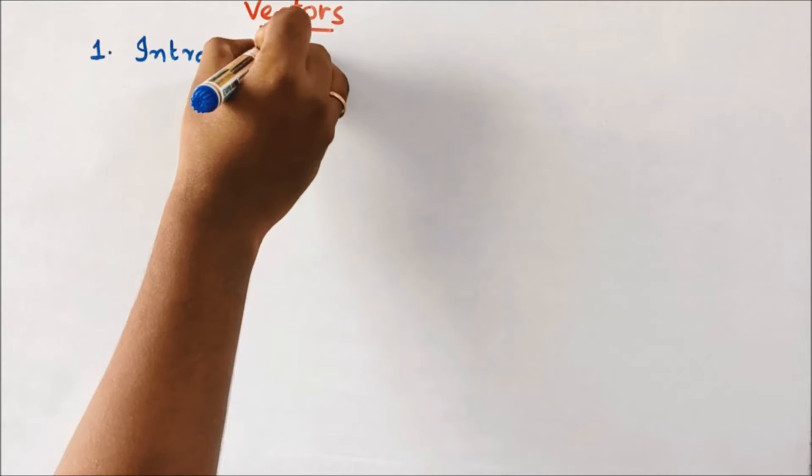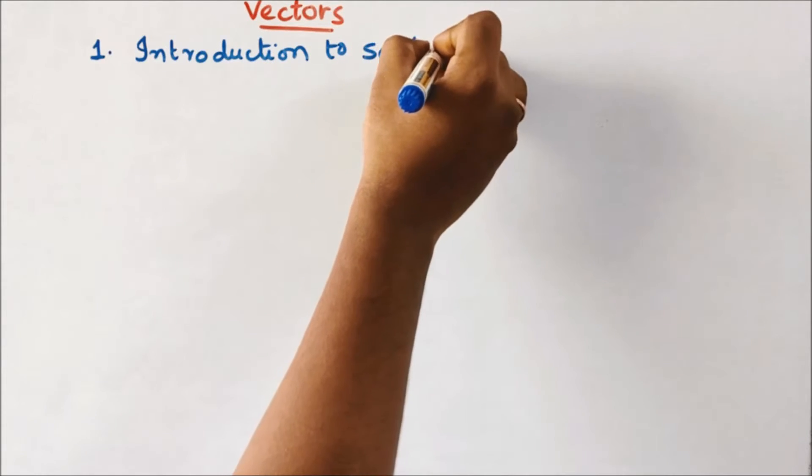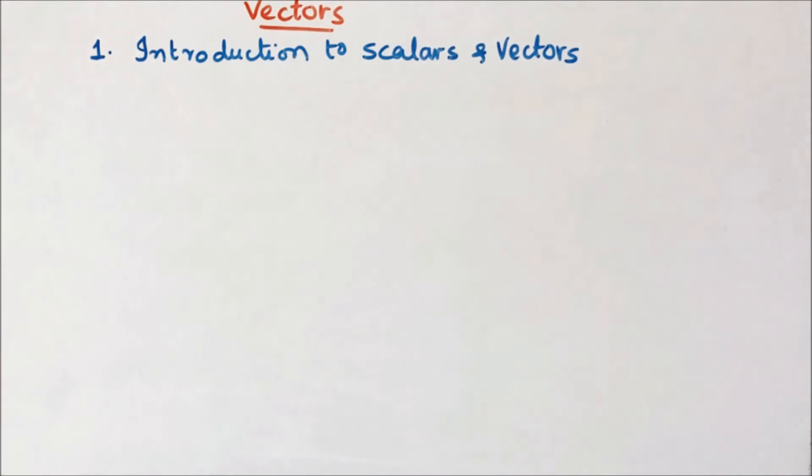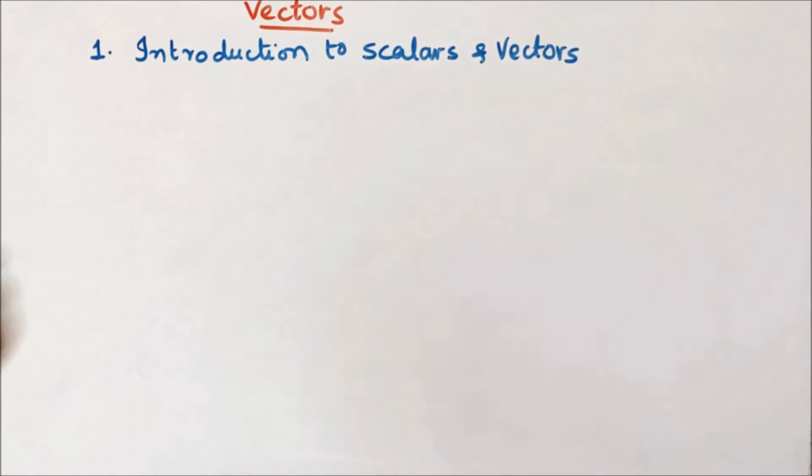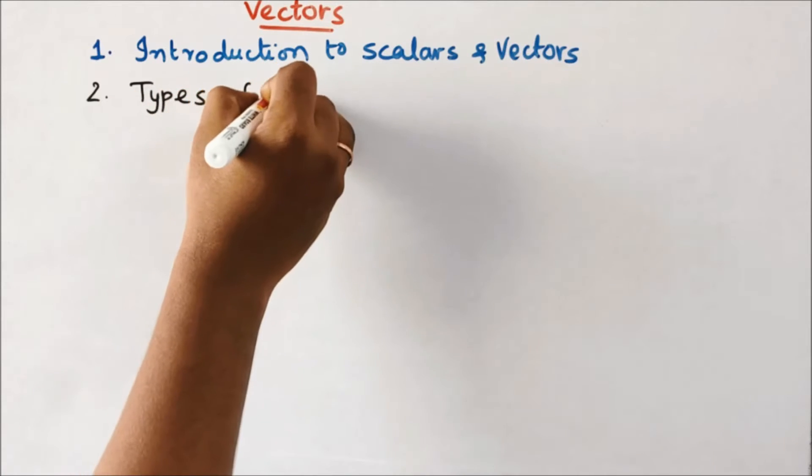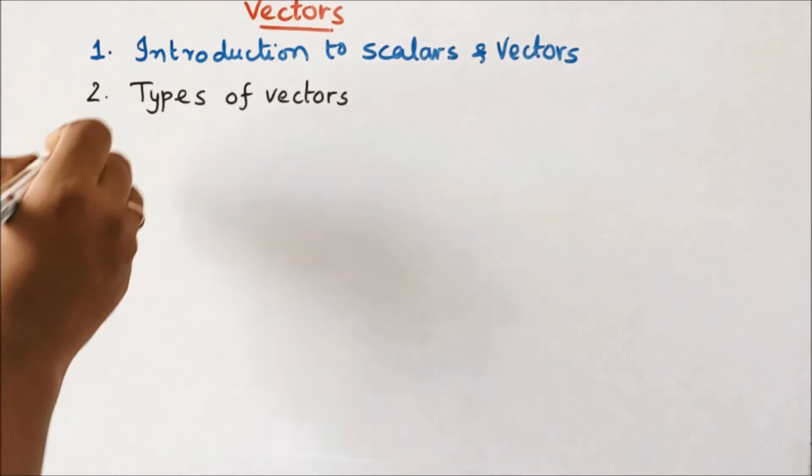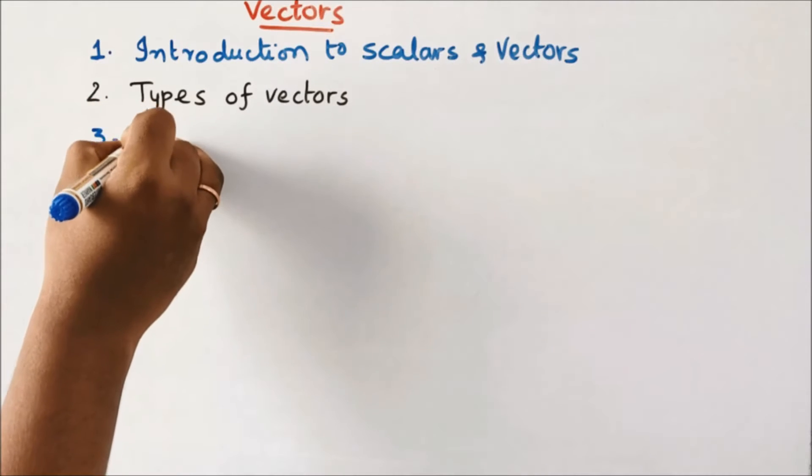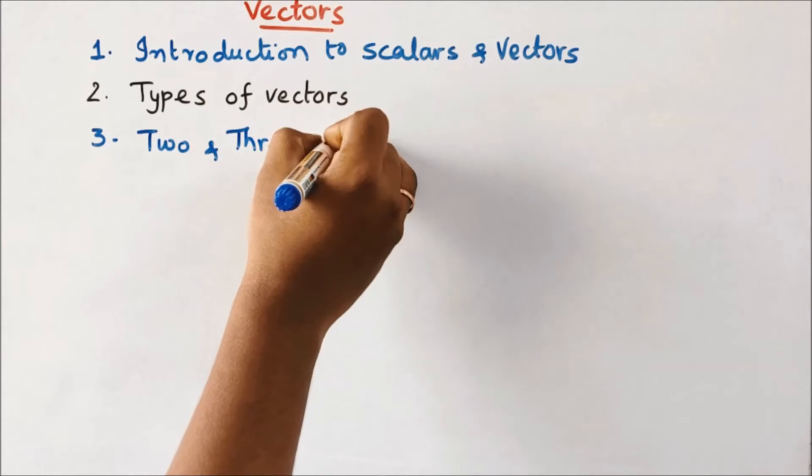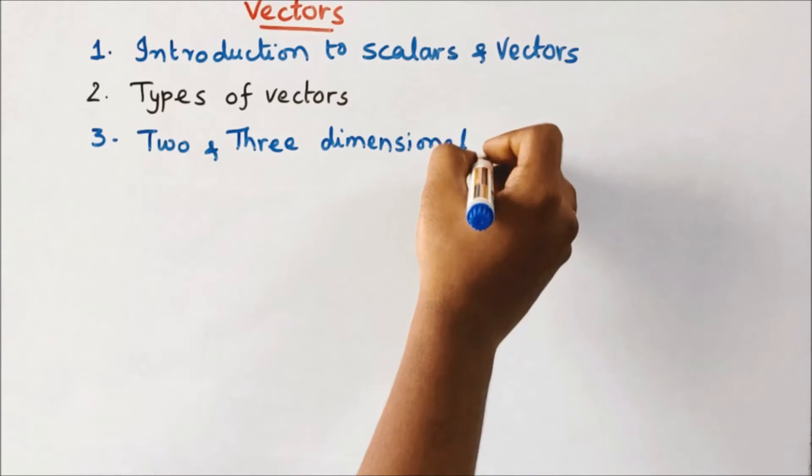Number two: types of vectors. Number three: two and three dimensional representation of vectors.